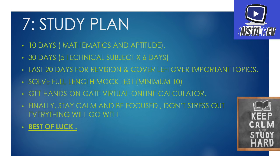Now for the study plan: in the first 10 days, cover mathematics and aptitude. Verbal ability needs daily practice, so study it on a regular basis. Mathematics and numerical ability should be covered in the first 10 days, with revision after certain intervals so you don't forget. From technical subjects, select 5 subjects with high weightage — for mechanical: manufacturing science, industrial engineering, thermal science, strength of material, and theory of machines, which account for up to 50 marks. Study the rest at an average level but focus on high-weightage subjects. Solve previous year GATE problems, prepare notes, and make a proper plan for revision. Start with one subject, complete it, then move to the next, marking difficult and important topics. In the next 30 days, cover technical subjects.